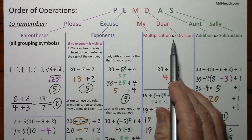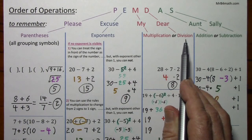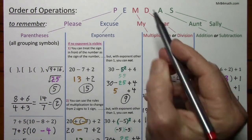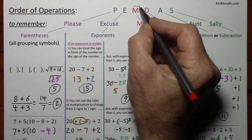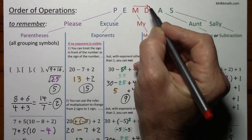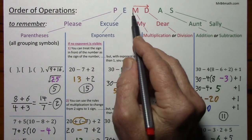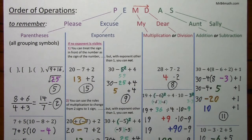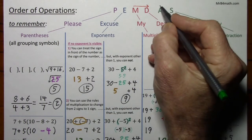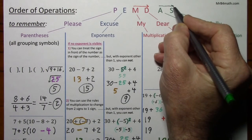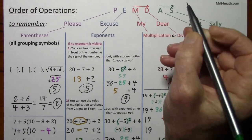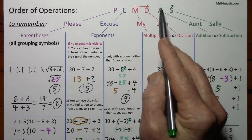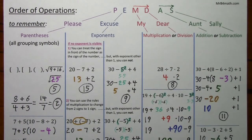Since you have to deal with multiplication or division whichever you get to first, I'll put a little arrow over the M and the D to indicate whichever you get to first. I'll do the same with the A and S — an arrow indicating whichever you get to first from left to right is the one you're concerned with.